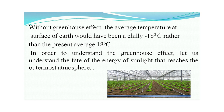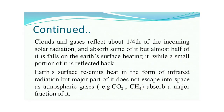To understand the greenhouse effect, let us understand the fate of solar energy reaching the outermost atmosphere. Clouds and gases reflect about one-fourth of incoming solar radiation and absorb some of it, but almost half of it falls on the earth's surface, heating it, while a small portion is reflected back. The earth's surface re-emits heat in the form of infrared radiation, but a major part of it does not escape into space, as atmospheric gases such as carbon dioxide and methane absorb a major fraction of it.